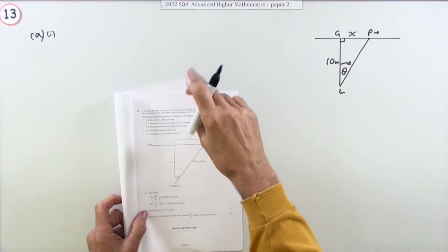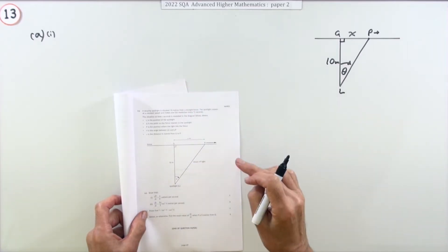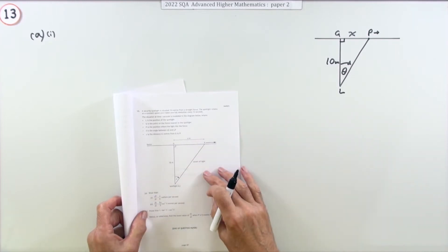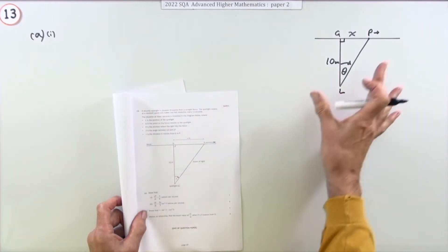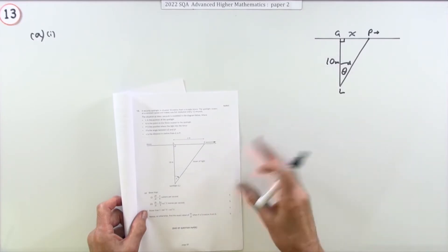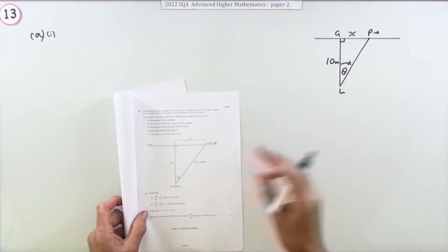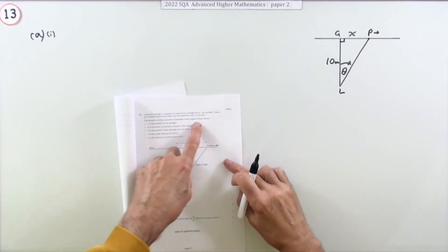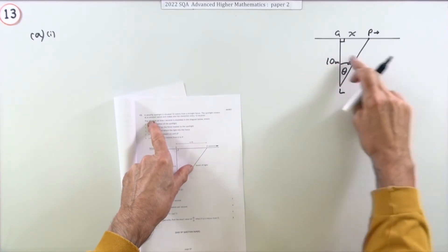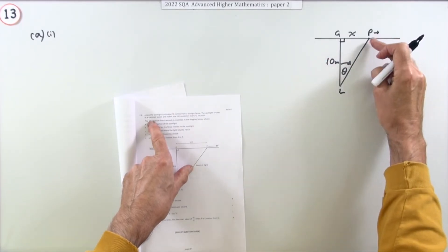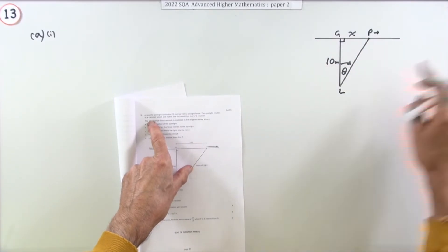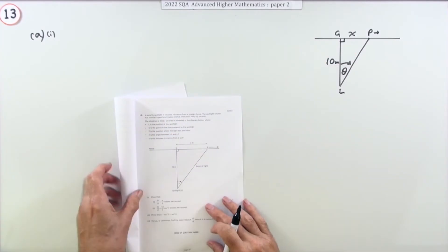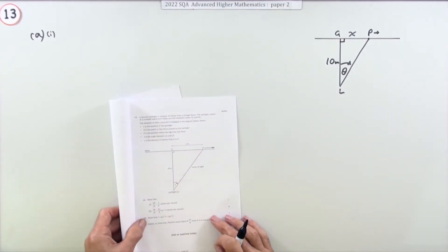Question 13, the last question in the 2022 Advanced Higher Paper 2, worth 9 marks. It's about related rates of change, that's just the chain rule. It describes a physical situation: a security spotlight is situated 10 meters from a wall. The spotlight rotates at constant speed, so that speed's constant, but the spot of light is accelerating away, and makes one full revolution every 12 seconds. The rest is described in that picture there.